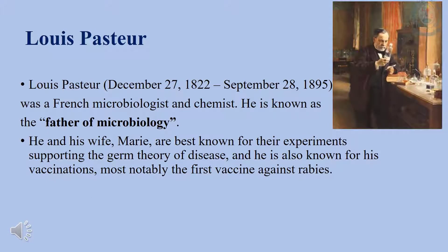When we talk about microorganisms and microbiology, Louis Pasteur is a key figure. Louis Pasteur was a French scientist in the 19th century. He is known as the father of microbiology because of his remarkable discoveries in the 1880s. He and his colleagues are best known for their experiments supporting the germ theory of disease, and he is also known for his vaccinations, most notably the first vaccine against rabies. He is best known for the discovery of vaccinations, pasteurization, fermentation, and proving that germs cause diseases.